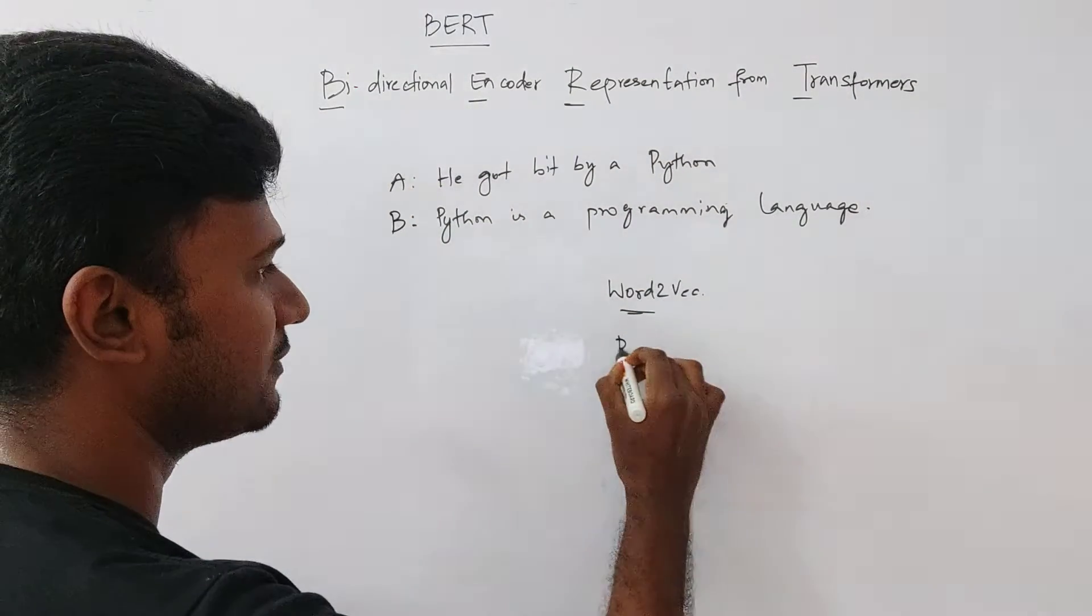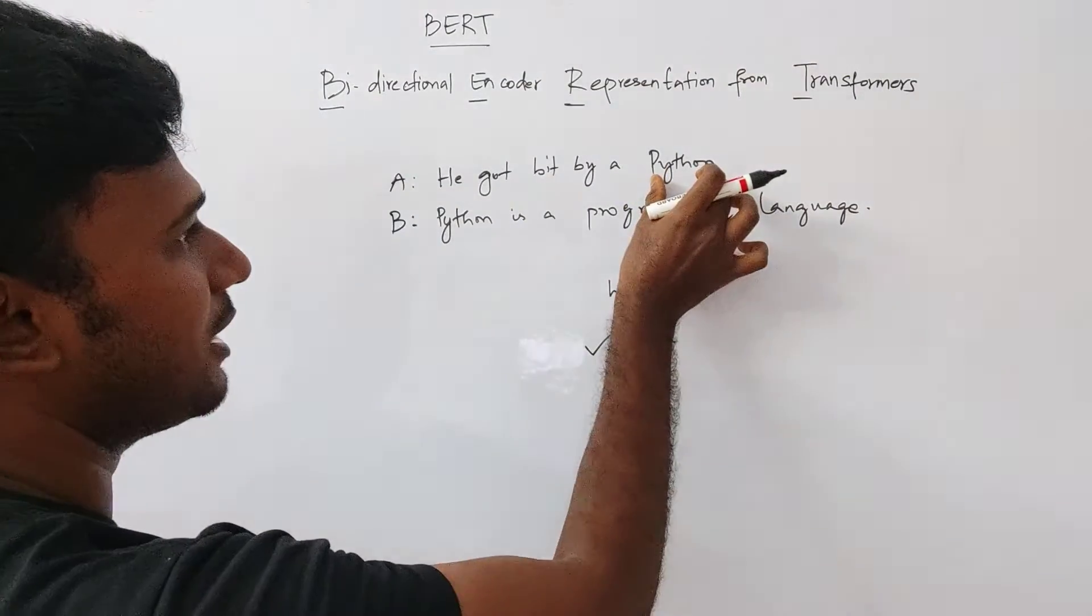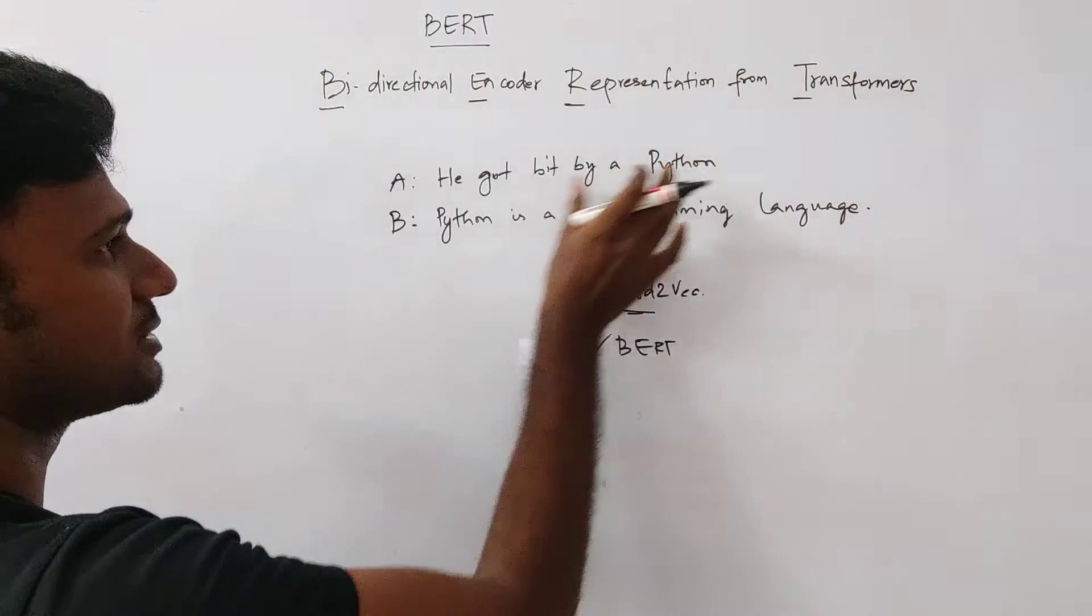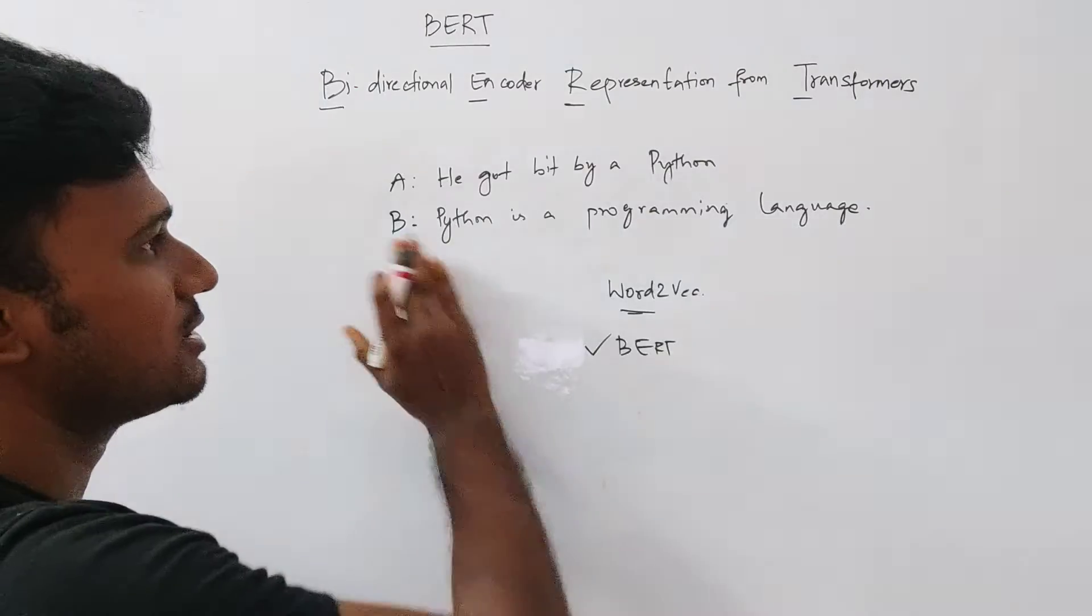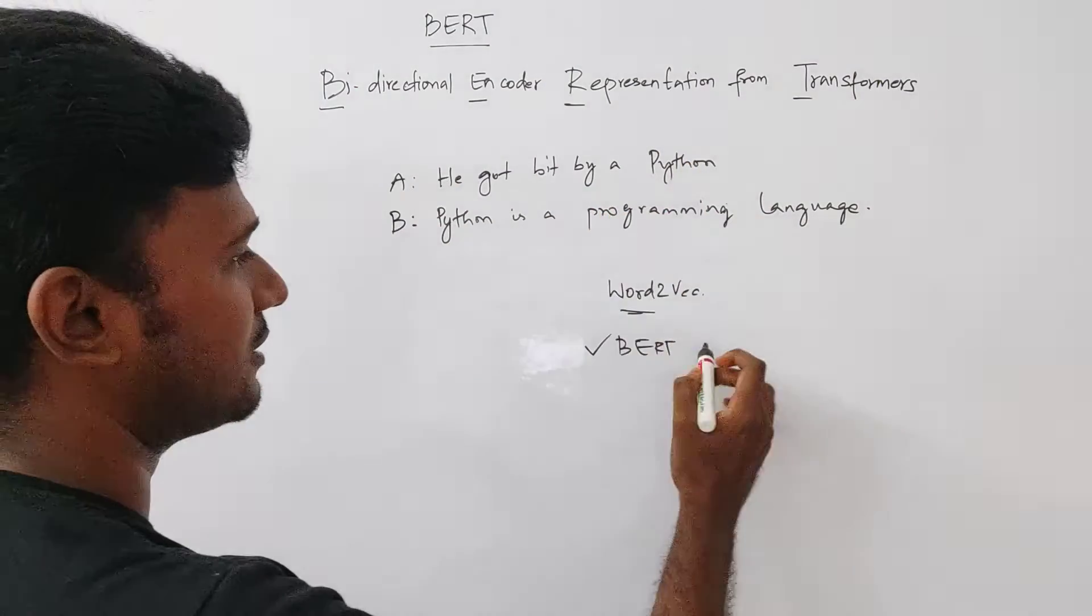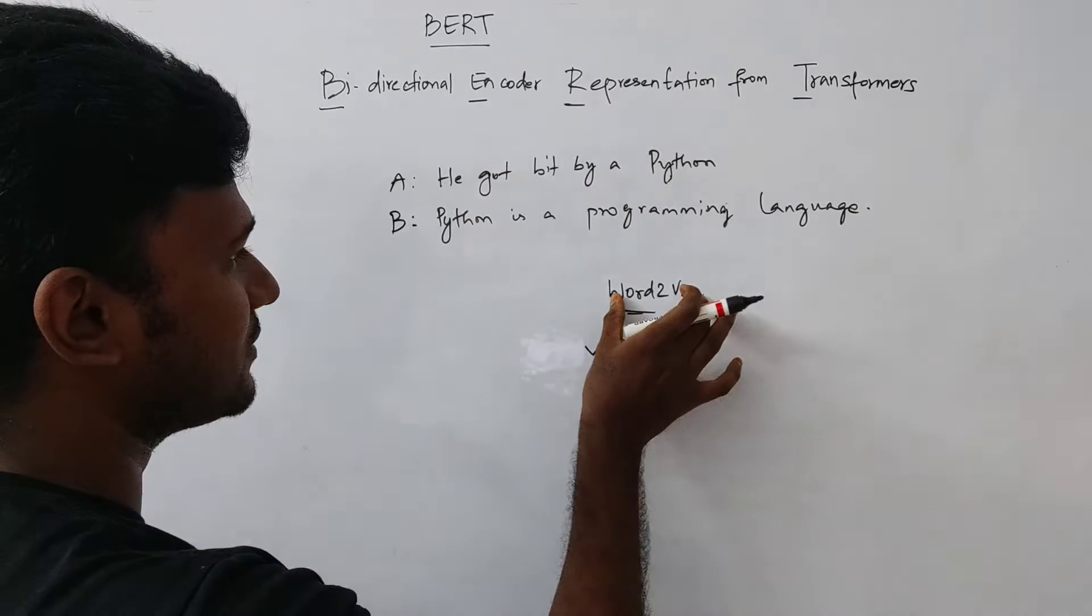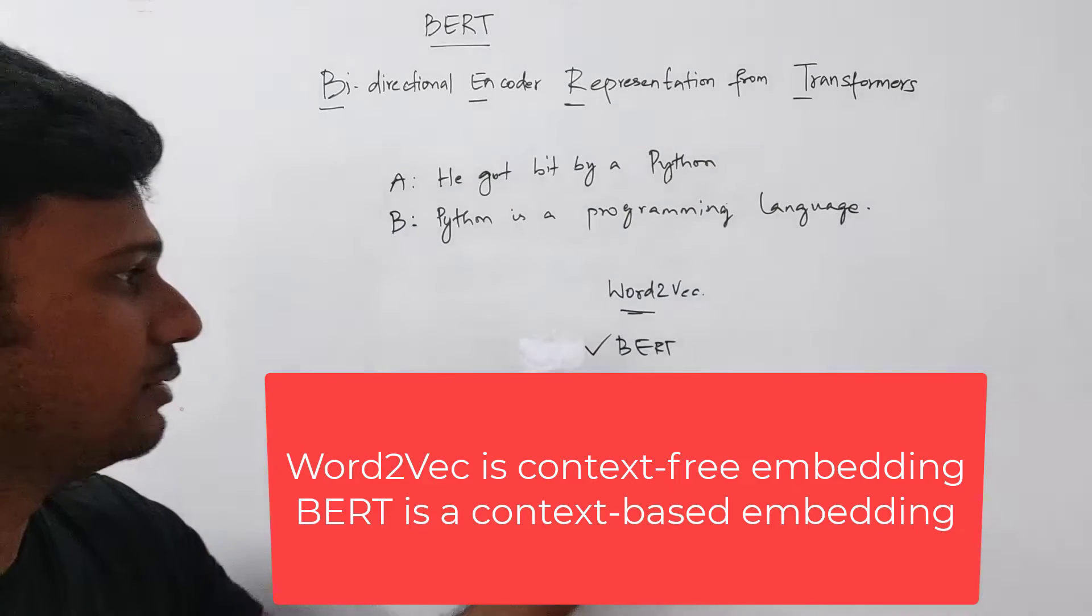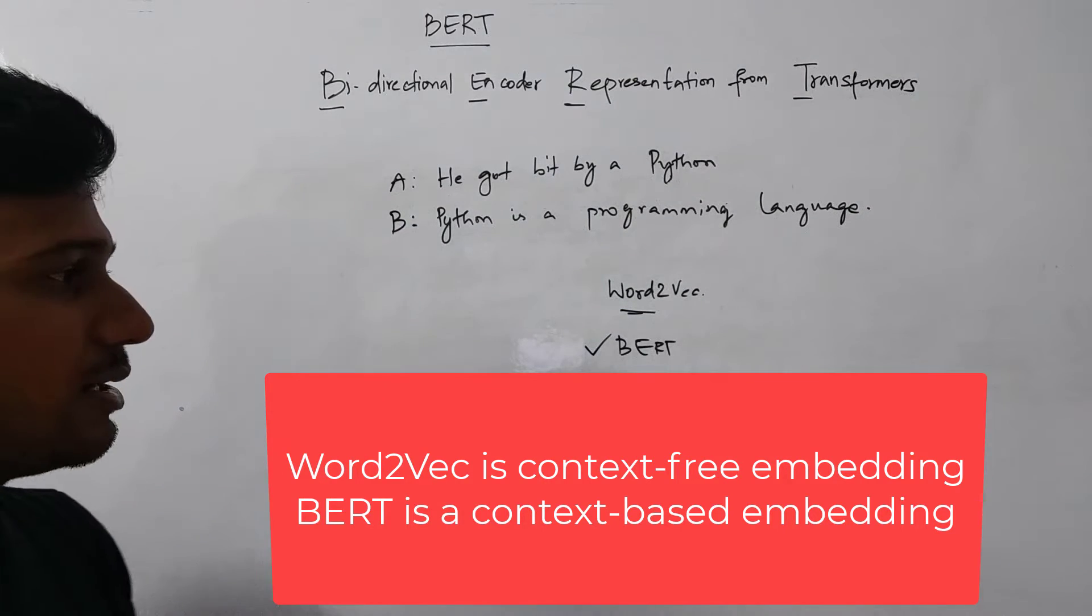Whereas BERT is able to give that. BERT is able to give the different embeddings for this python and this python because the way this python is used here is completely different from the way the python is used here. So this is called as context based. It is depending on the context of the sentence, whereas the algorithms like Word2vec is not dependent on the context. So that is where BERT was doing phenomenally and it was giving a lot of state of the art results.